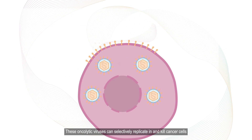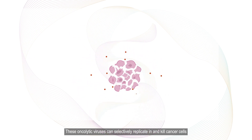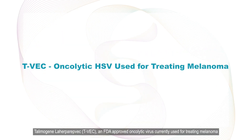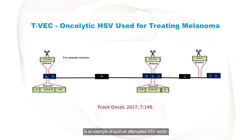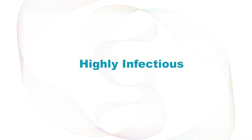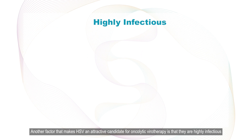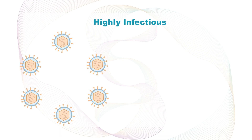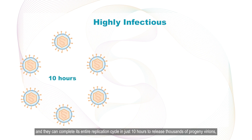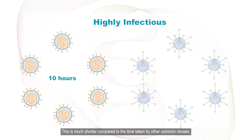These oncolytic viruses can selectively replicate in and kill cancer cells, while being unable to grow in normal cells. Talimogene, or T-VEC, an FDA-approved oncolytic virus currently used for treating melanoma, is an example of such an attenuated HSV vector. Another factor that makes HSV an attractive candidate for oncolytic viral therapy is that they are highly infectious and can complete their entire replication cycle in just 10 hours to release thousands of progeny virions. This is much shorter compared to the time taken by other common viruses.